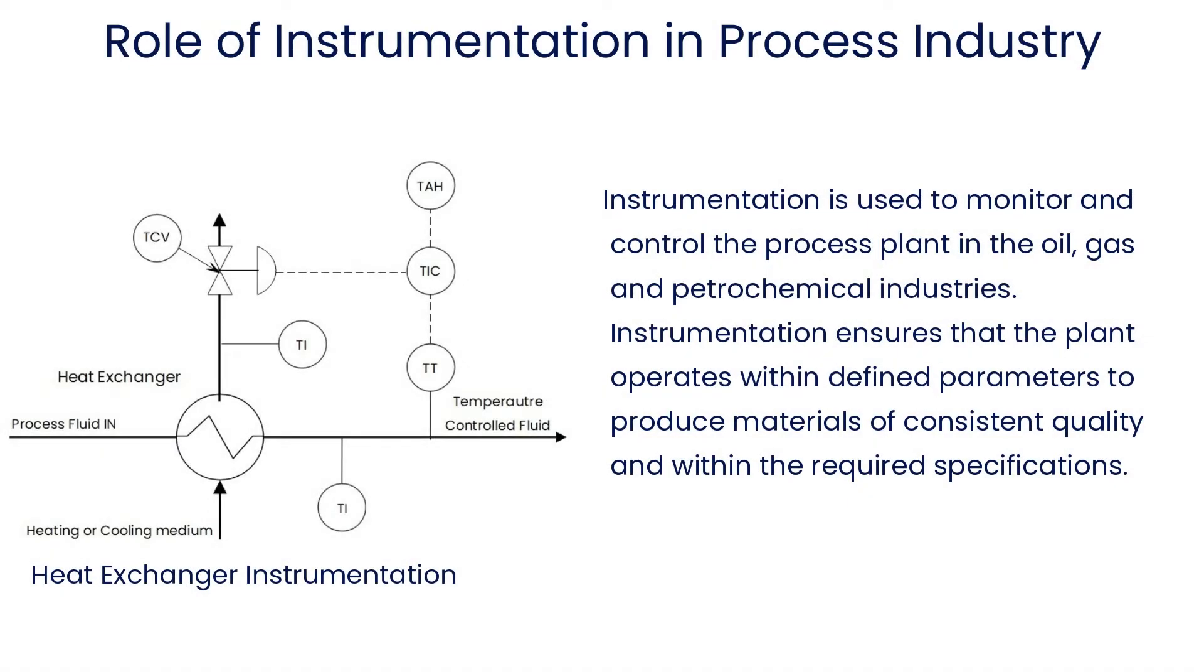First of all, we need to know what is the role of instrumentation in the process industry. Instrumentation is used to monitor and control the process plant in various types of industries, for example, oil and gas industry, petrochemical industry, power plants, etc.